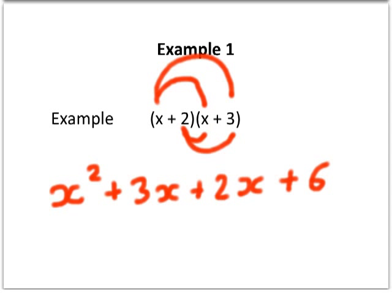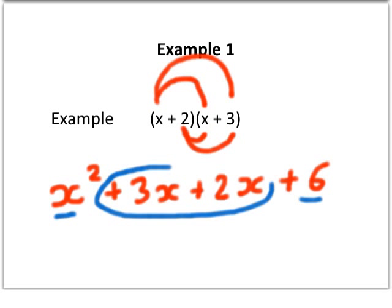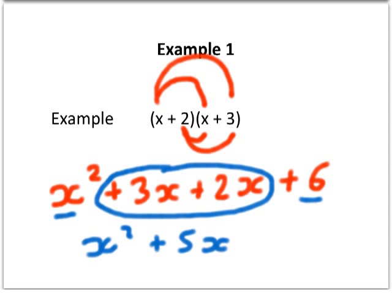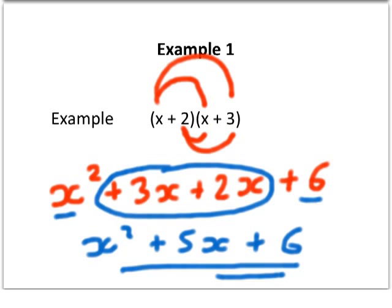That's actually an example of the brackets expanded. But what we do need to do is simplify it. The x squared and the 6 we can't simplify, but the x's in the middle we can. 3x plus 2x is 5x, so our final answer is x squared plus 5x plus 6. In an exam, just underline your answer.